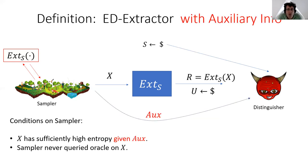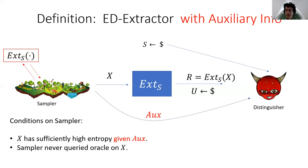This is the basic definition. We also consider a strengthening called ED extractors with auxiliary info, where the sampler can also produce some auxiliary info that it gives to the distinguisher, as long as x has high enough entropy even conditioned on the auxiliary info. I want to mention that in the information-theoretic setting, where extractors have generally been studied, you could consider a definition with or without auxiliary info, and it doesn't make much difference. We're going to see that things are very different here.